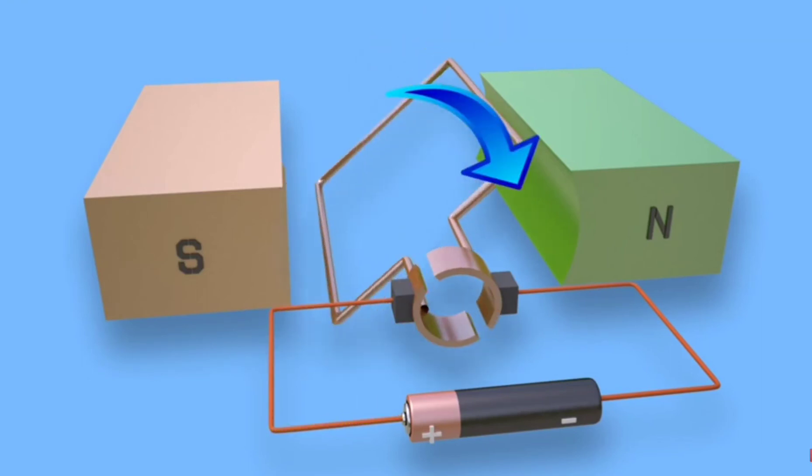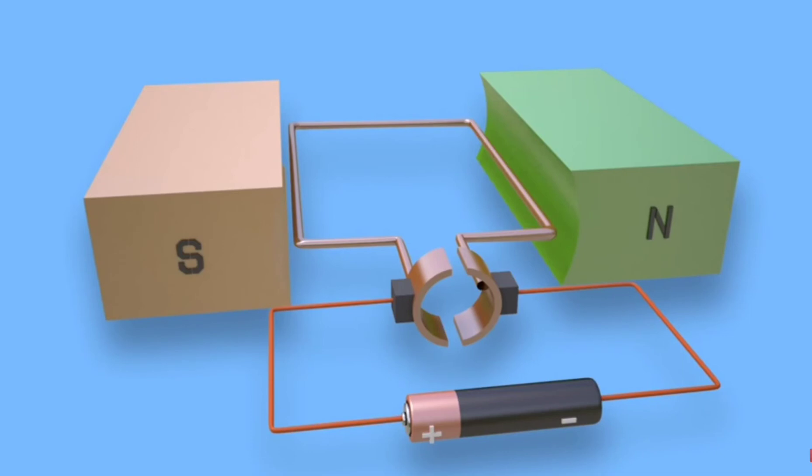Due to moment of inertia, the turn continues to rotate and comes horizontal again. The position of conductors has changed - the conductor which was previously in the left position comes to the right position, and which was previously in the right position comes to the left position.